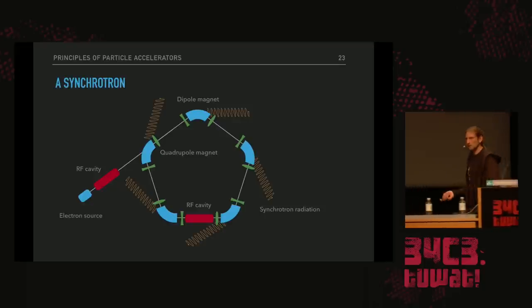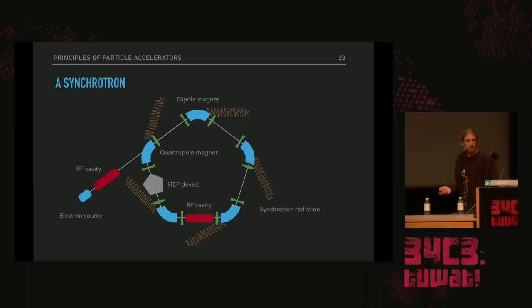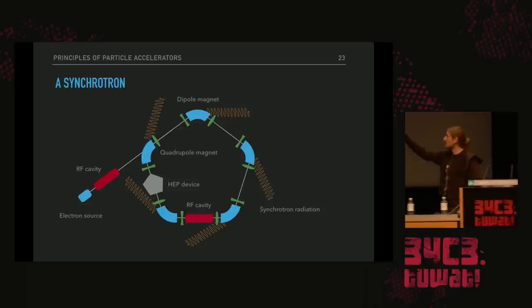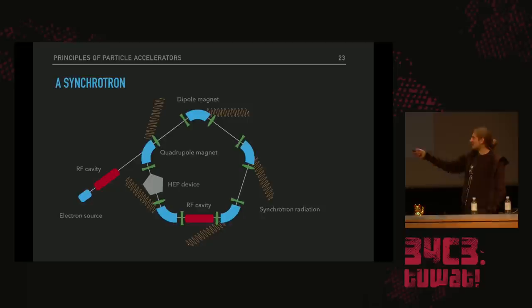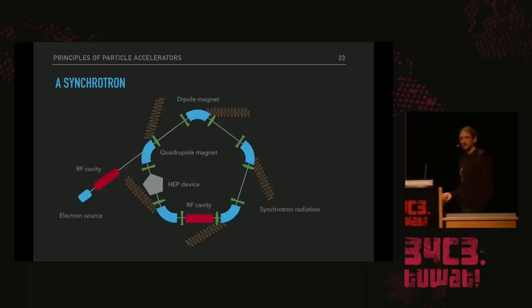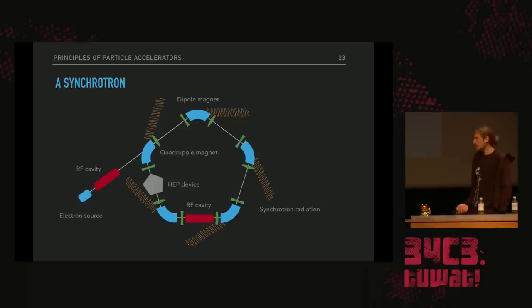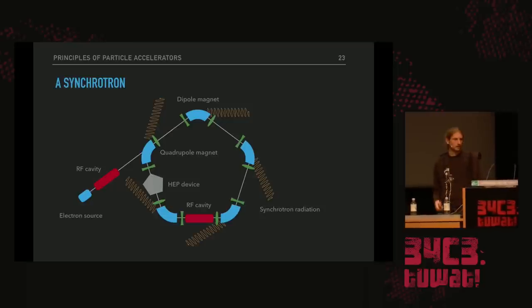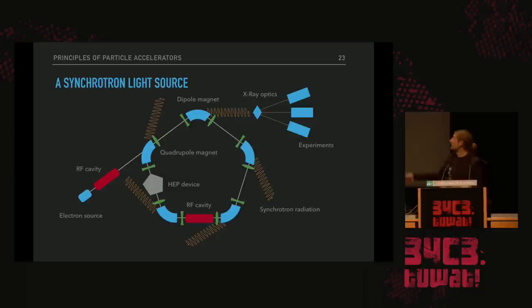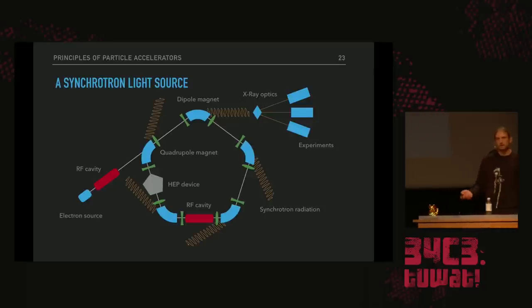Originally these devices were built for high energy physics applications — like the LHC, the Large Hadron Collider at CERN, which is nothing more but this at its basic principle. In the early 1950s when they started building these accelerators, synchrotron radiation was found to be nothing more than a nuisance that made everything more complicated. But in the 1960s, X-ray diffraction became a thing, and scientists started to realize the capabilities of this radiation. They placed X-ray optics to guide the synchrotron radiation to experiments — these are considered the first generation synchrotron light sources. An example is the Tantalus-1 accelerator in the late 1960s.